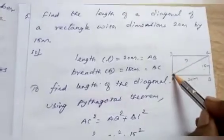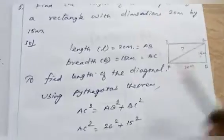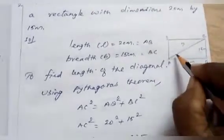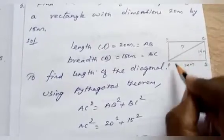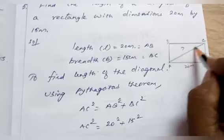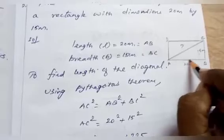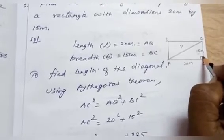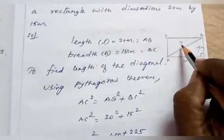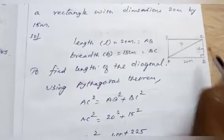We know that in a rectangle the diagonals are equal. In rectangle ABCD, AB = 20 meters and BC = 15 meters, and we need to find diagonal AC. Using the Pythagorean theorem in the right-angled triangle: the square of the hypotenuse is equal to the sum of the squares of the other two sides.